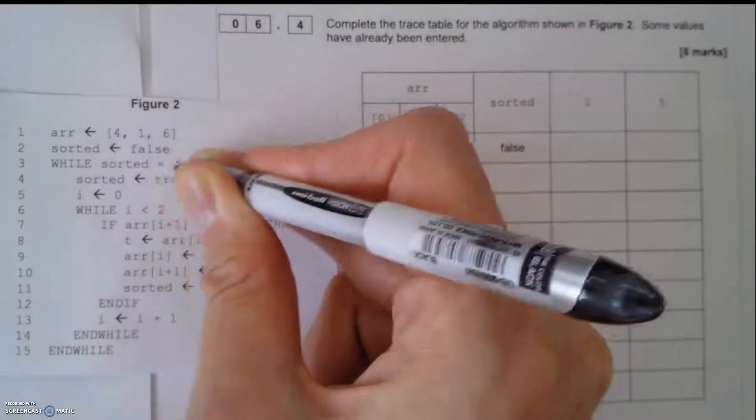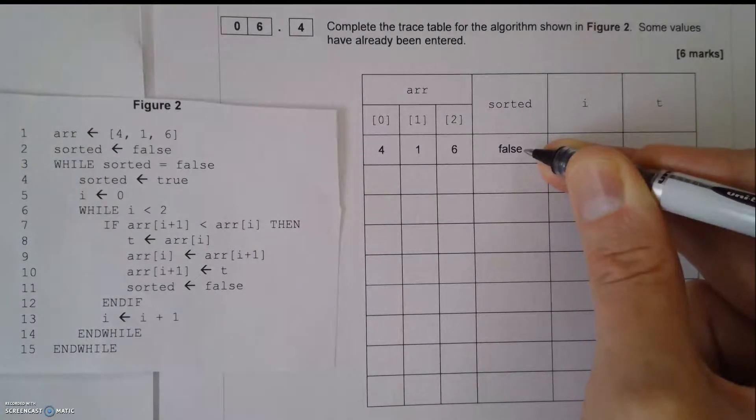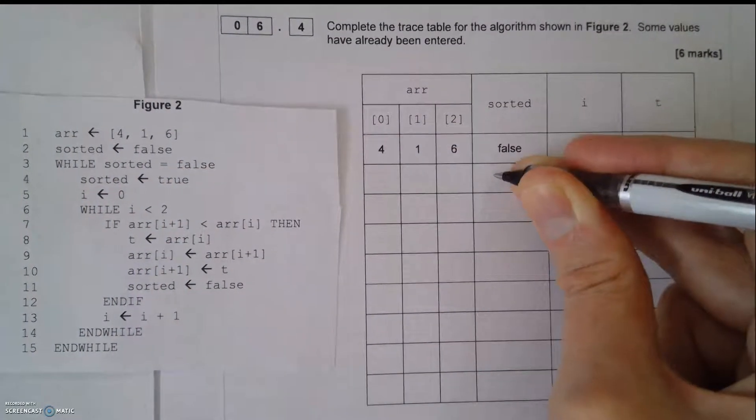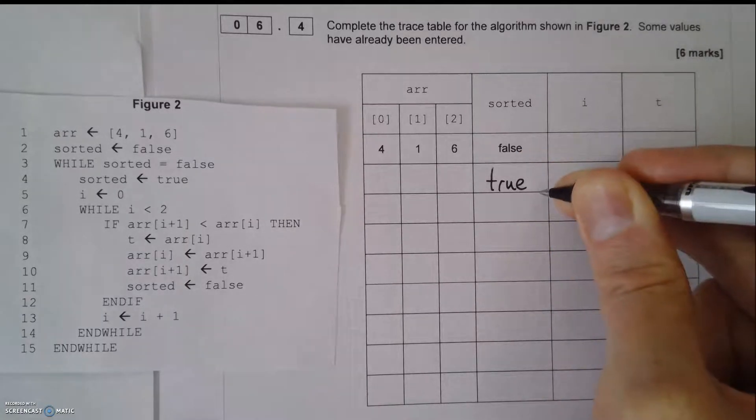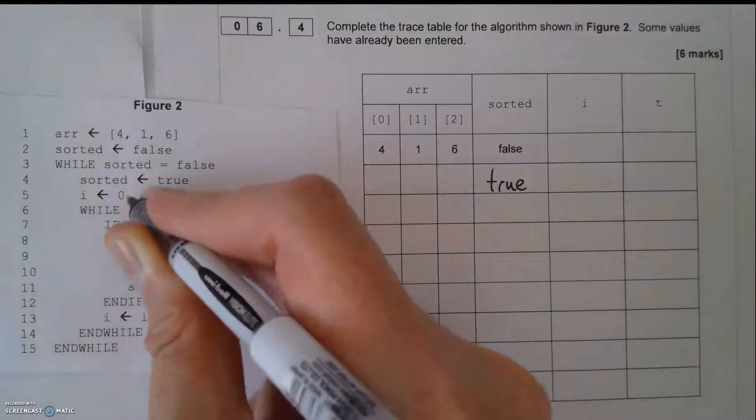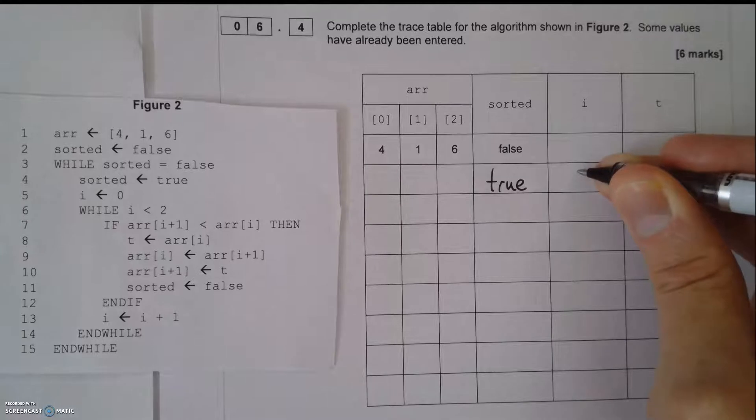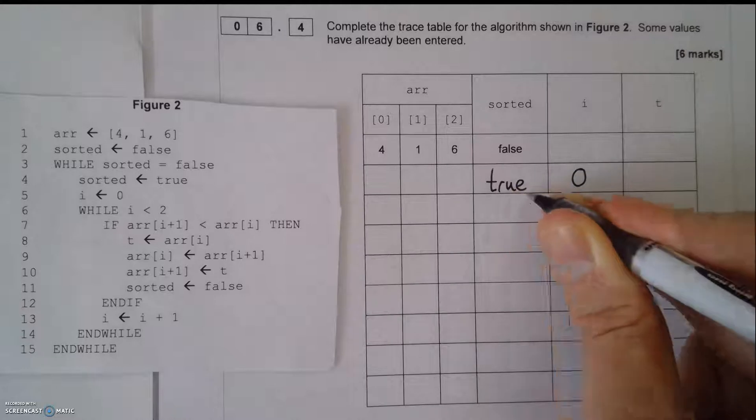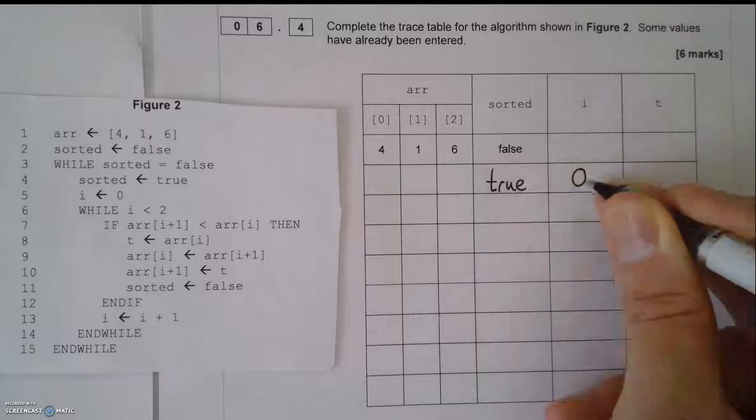While sorted equals false - yes, it does equal false at the moment. Sorted equals true. So first thing I'm going to write is true in there. Now, i equals 0. So 0 is going to be written in i there. So I'm recording the contents of the variable. At the moment, sorted is true and i is 0.